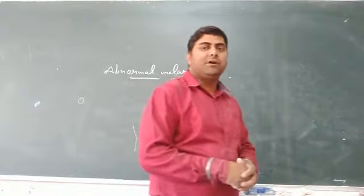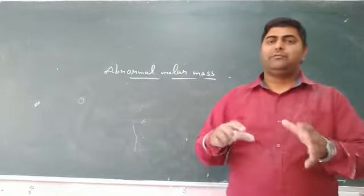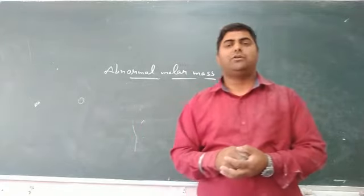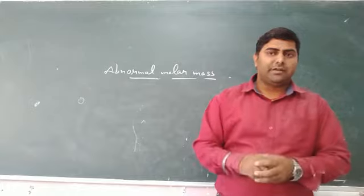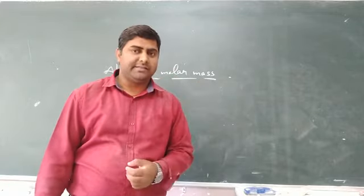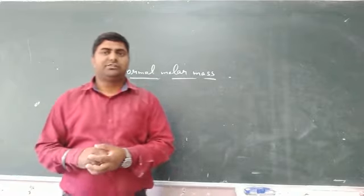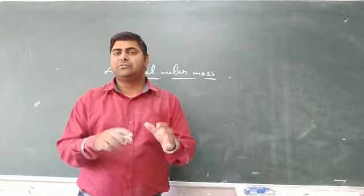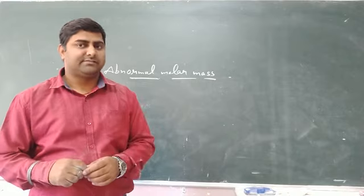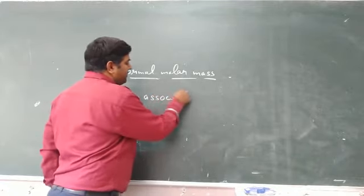Today we are going to discuss about abnormal molar masses. The molar mass of a non-volatile solute, which we calculate by using four colligative properties, sometimes comes different from the actual molar mass. Since colligative properties depend upon the number of solute particles, whenever there is association, the number of particles decreases, and whenever there is dissociation, the number of particles increases.